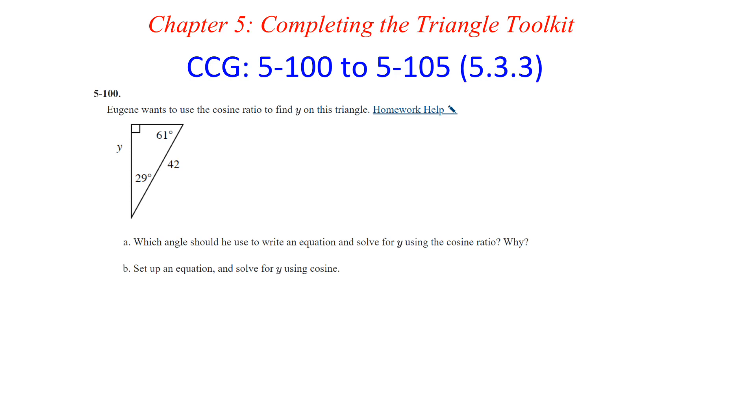Question 100. Eugene wants to use the cosine ratio to find y on this triangle. Part A: Which angle should he use to write an equation and solve for y using the cosine ratio? The cosine ratio uses adjacent over hypotenuse. You can already see that we have the hypotenuse, so we want to be able to use this leg of y, and cosine is adjacent, so we want to use the angle of 29 degrees. 29 degrees then represents that the y is the adjacent side.